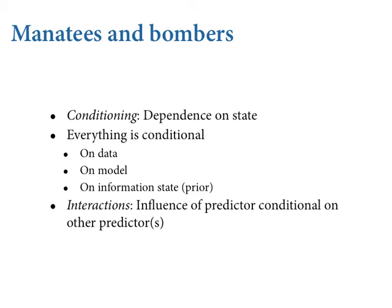The bottom example is World War II bombers. The Royal Air Force wanted to up-armor their aircraft but couldn't armor the whole plane. The first idea was to look where the bullet holes are and put armor there — but this is exactly the opposite of what you want to do. Conditional on having returned from a mission, the bullet holes are in places that don't matter. Notice none of these planes have bullet holes in the cockpit — if there was a bullet hole in the cockpit, the plane didn't come back.